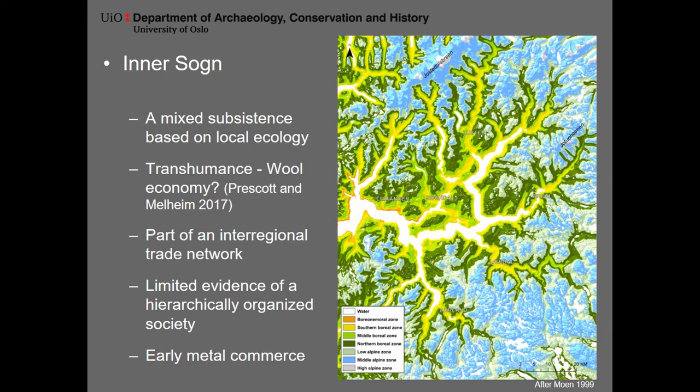Innozong has a highly mixed subsistence based on the local ecology. As you can see from this map, there are multiple vegetation zones within an extremely short area of each other, enabling both cereal cultivation, seasonal pastoralism, and extensive hunting grounds. They were definitely part of an inter-regional trade network as seen through the material assembly. But what is interesting is there is very limited evidence of a more hierarchically organized society, though there is definitely access to early metal commerce.